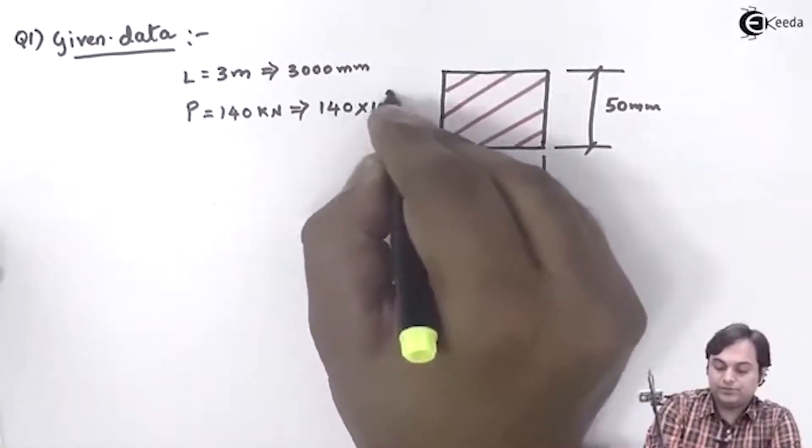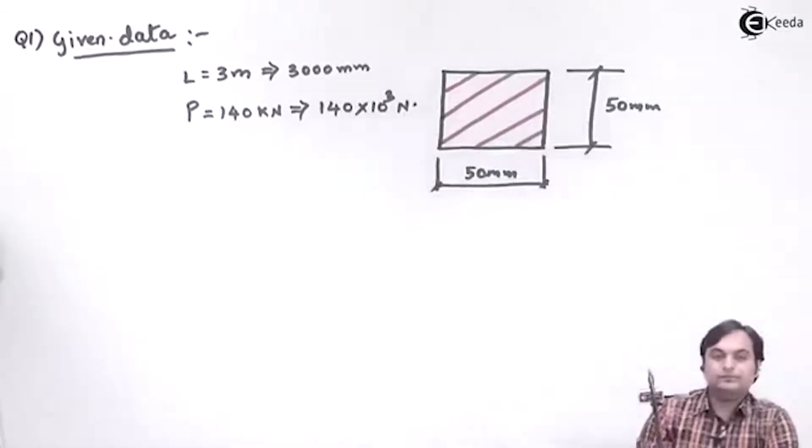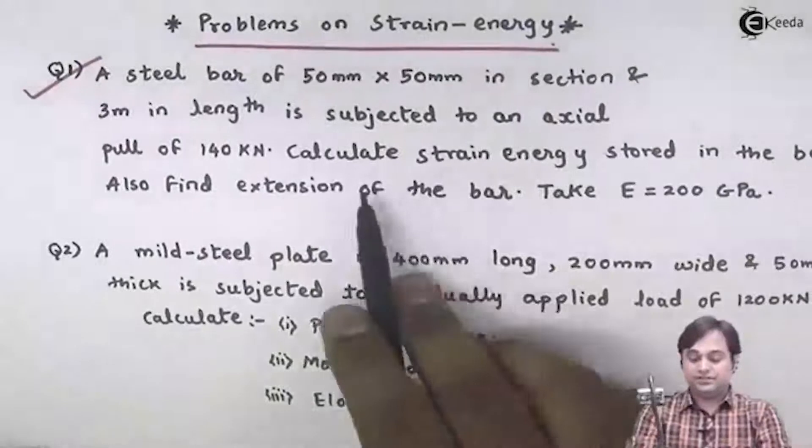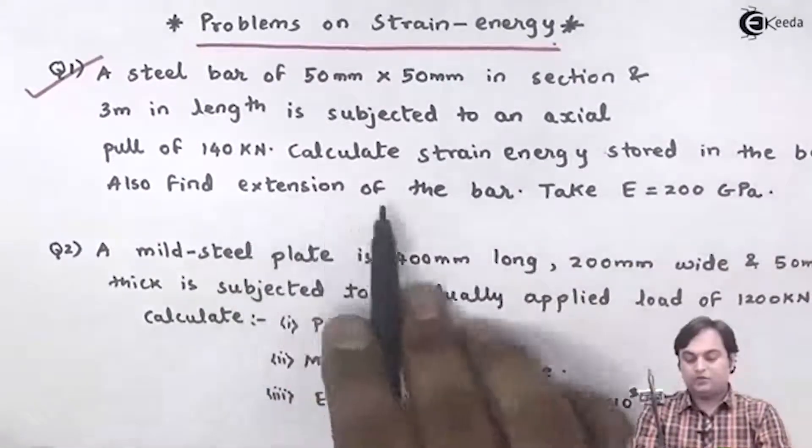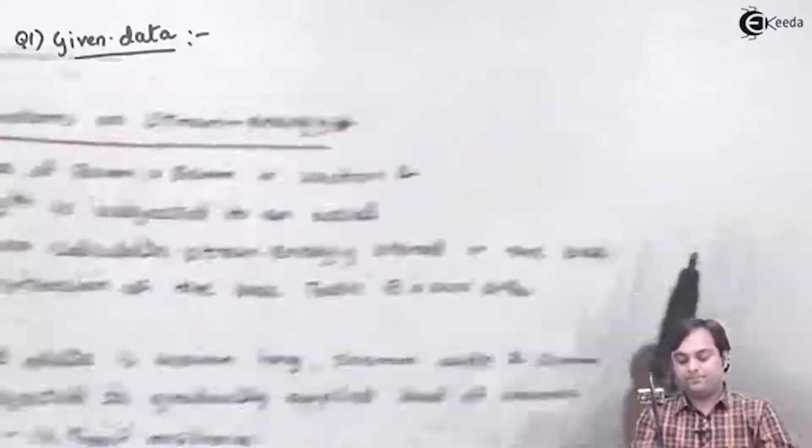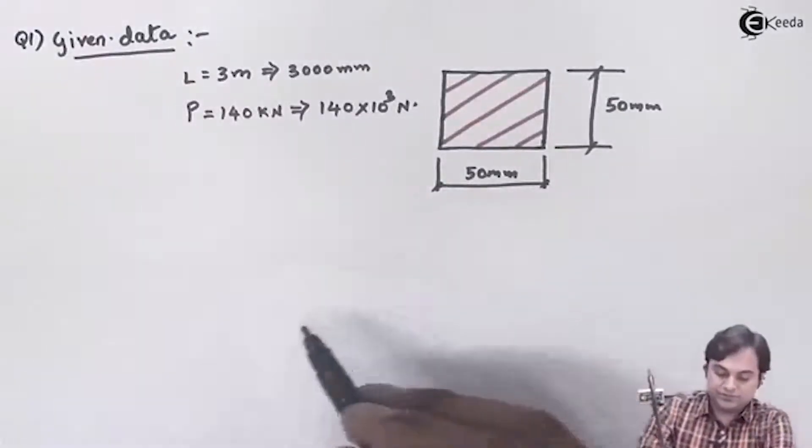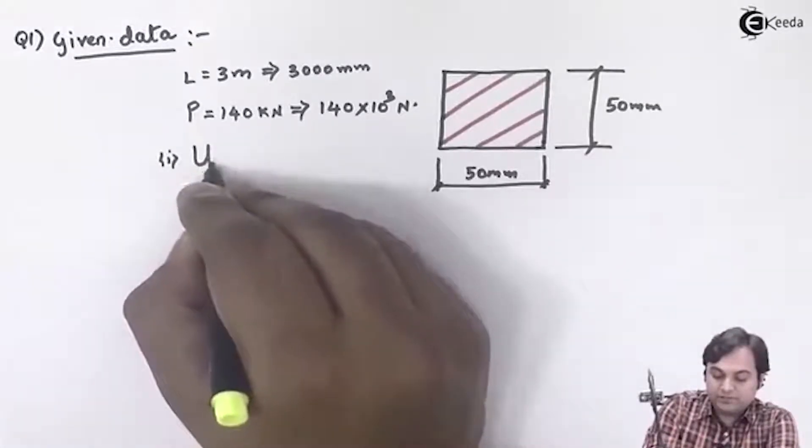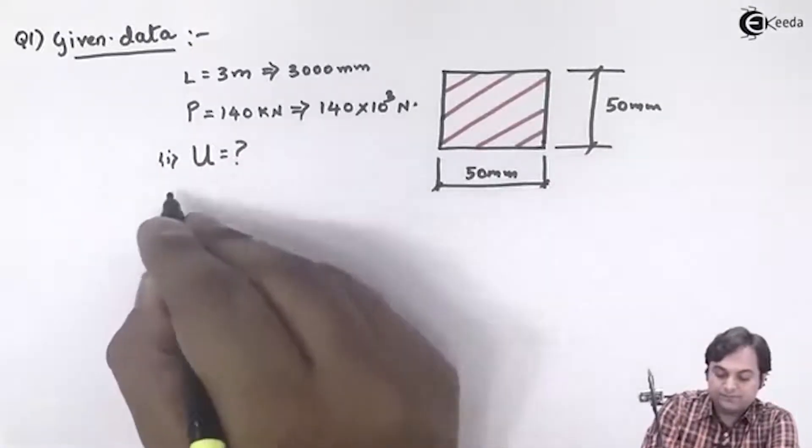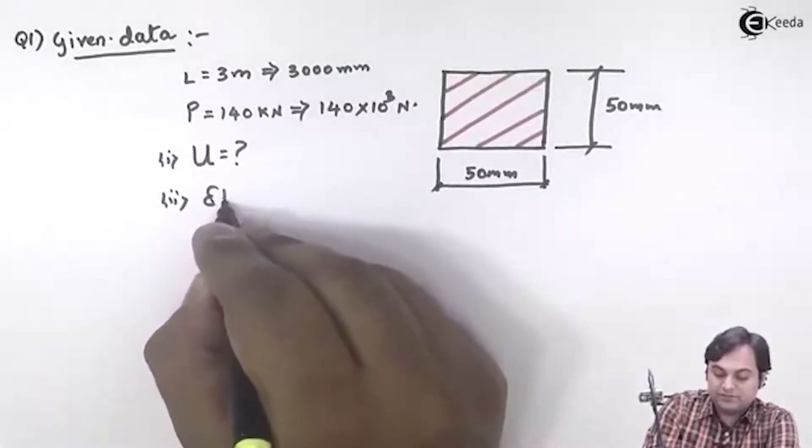Next, the question is calculate strain energy stored in the bar, also find extension of the bar. So the first question is we have to calculate the value of capital U, that is strain energy, and the second question is we have to calculate deflection δL.